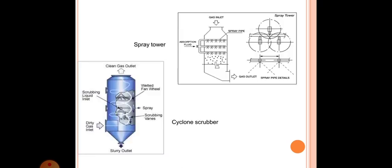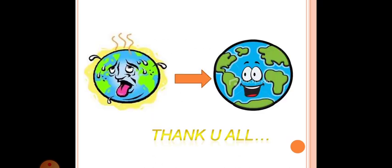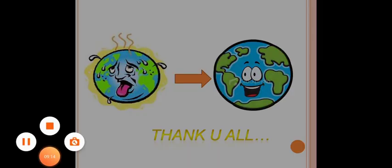Cyclone scrubber as you can observe by this figure. Advantages are similar, can simultaneously remove particulates and gaseous pollutants, hot gases can be cooled down, corrosive gases can be recovered and neutralized. Disadvantages are lot of waste waters produced, poses freezing problem in cold countries, maintenance cost is high when corrosive materials are collected. Thank you, stay home, stay safe.